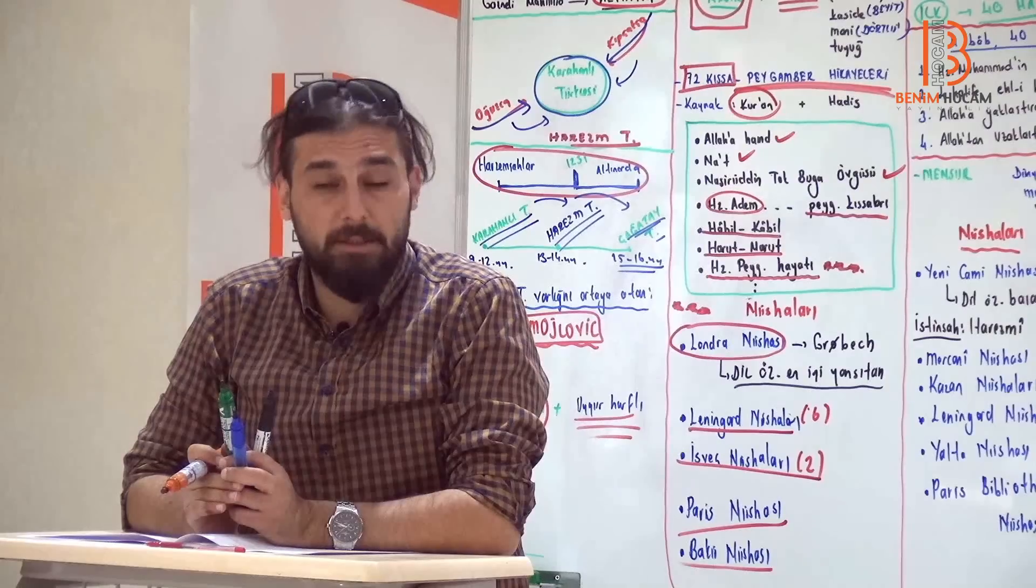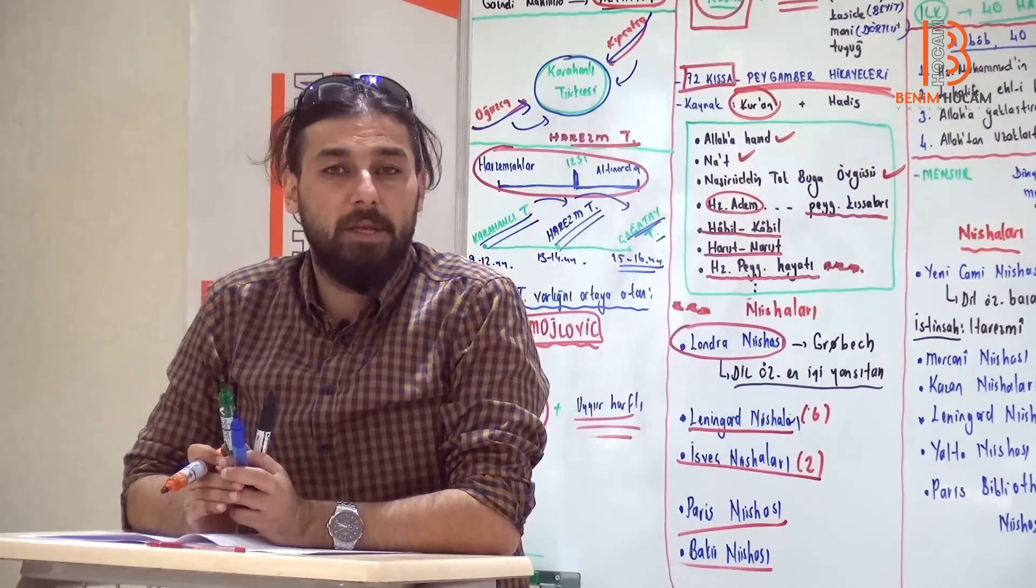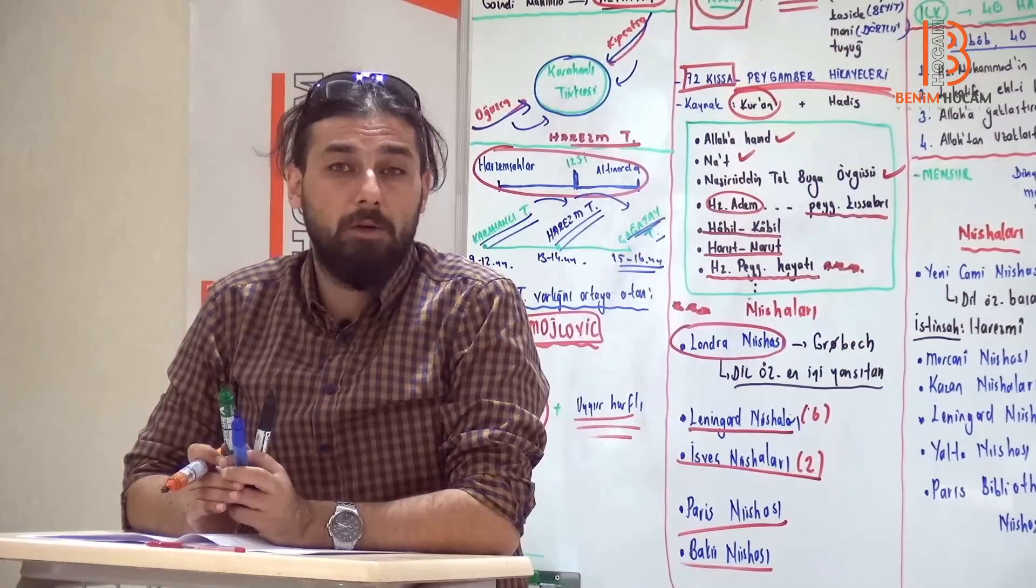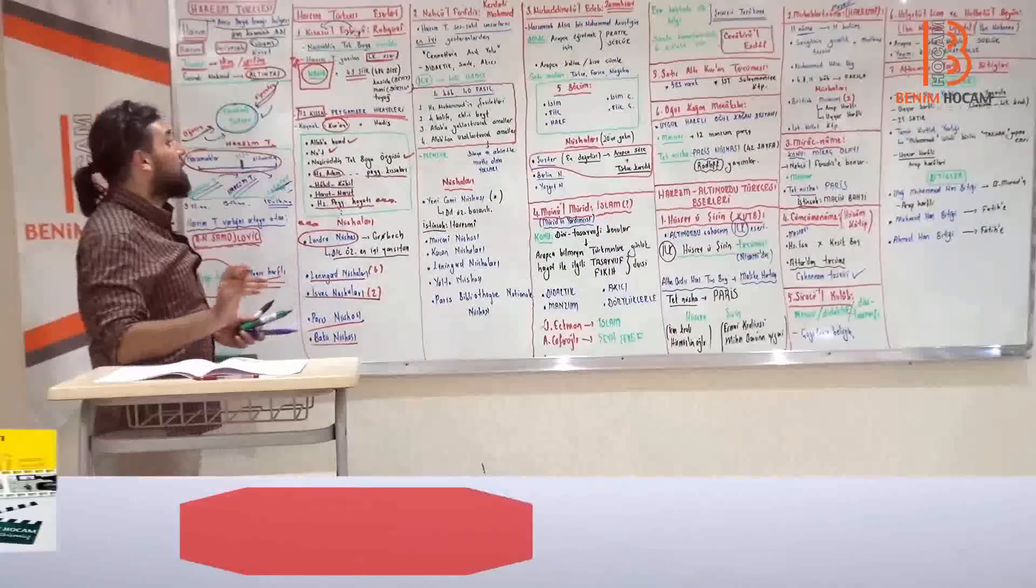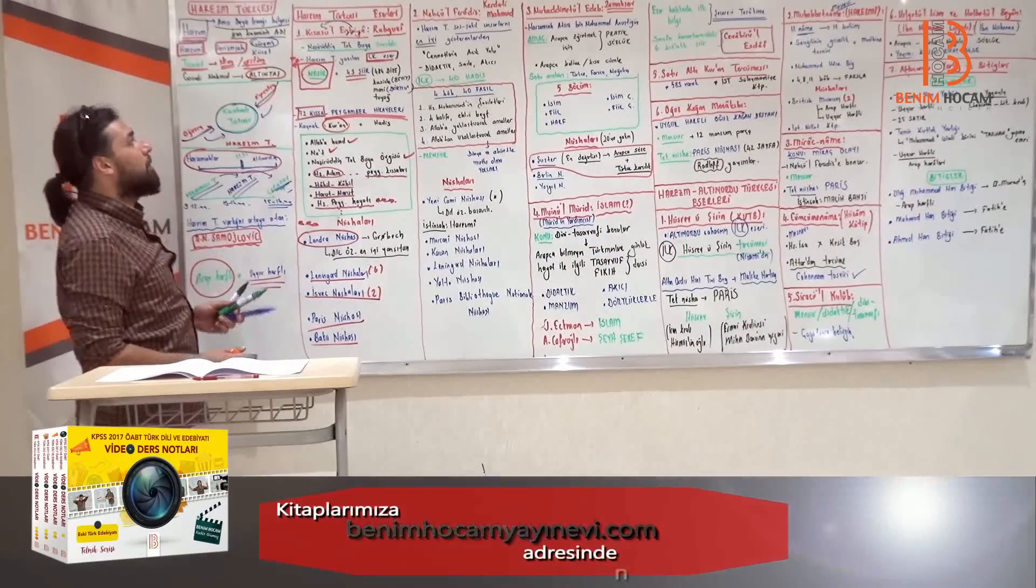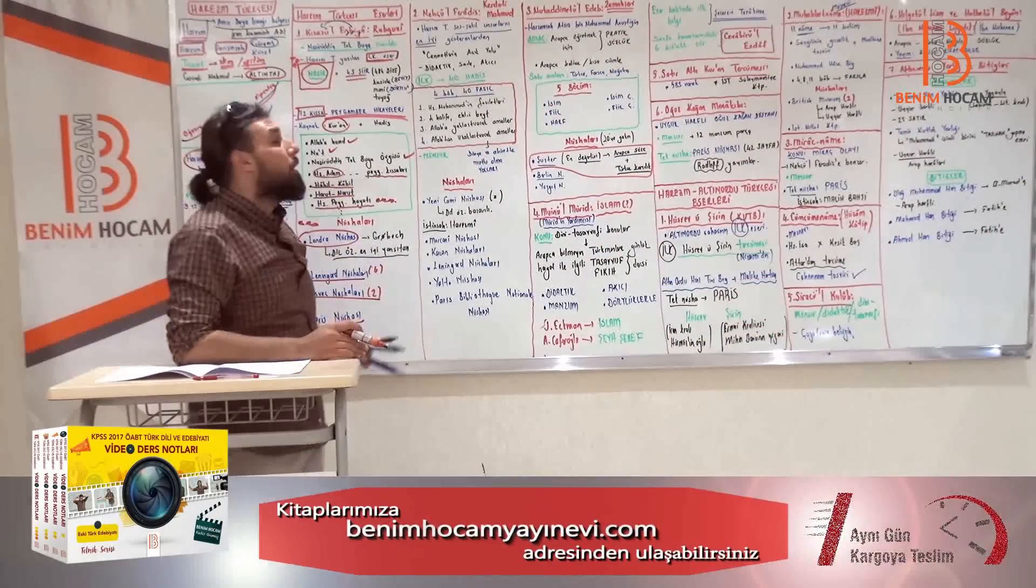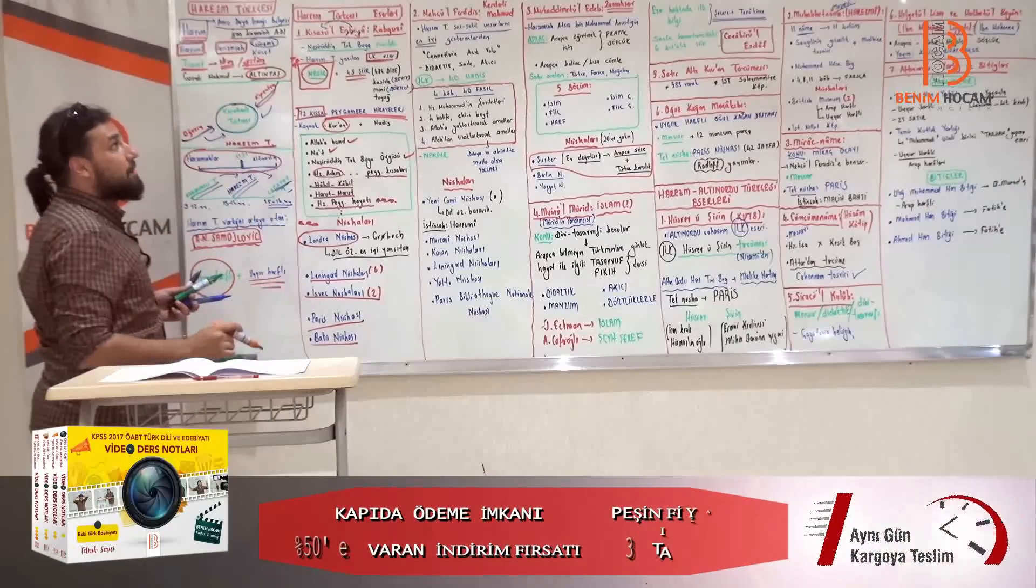Hz. Peygamber kıssaları vardır. 72 adet kıssa vardır. Ve burada arkadaşlar değişik hususlarla beraber, Habil Kabil, Harut, Marut'la beraber, Hz. Peygamberimizin hayatından da bahsetmesi önemlidir. Kaynakta Kur'an-ı Kerim'dir. Nasirettin Tokbuga'ya sunulur.